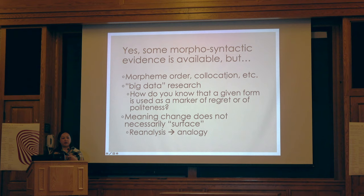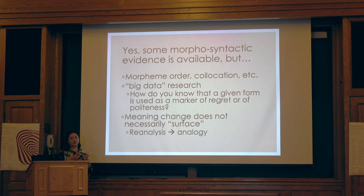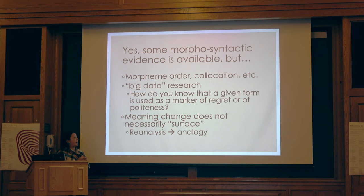Collocation — what kinds of objects can occur with a form — may indicate that functional semantic changes have taken place. But how do you know that a given form is used as a marker of regret or politeness? How do you know that this person is using a subjective meaning? It would be nice to objectively characterize what speakers think about these meanings. Also, meaning change does not necessarily surface because reanalysis occurs first, which doesn't surface in linguistic forms. When speakers use analogies to extend uses of other syntactic contexts, that's when we see semantic changes occur.